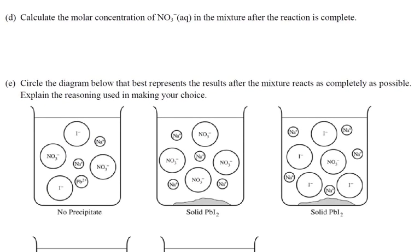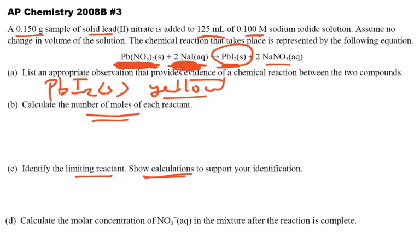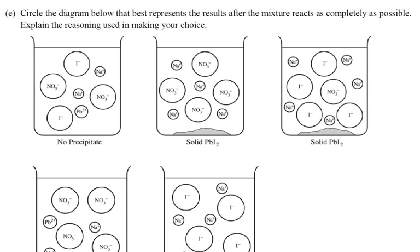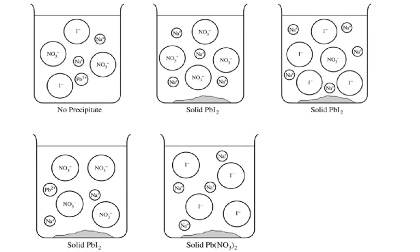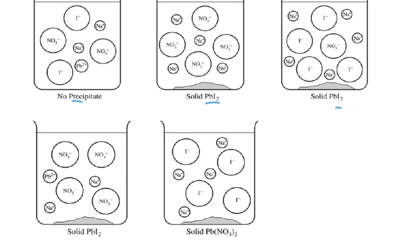For part D, calculate the molar concentration of nitrate in the mixture after the reaction is complete. How many nitrates do we have? The nitrates from lead nitrate are the same nitrates floating around in solution. Use the information we have to calculate how many moles of nitrate, then divide by total volume. For the last part, circle the diagram that best represents the mixture after reaction — the clue is what's precipitating. Is there a precipitate? Is it PbI₂ or lead nitrate?